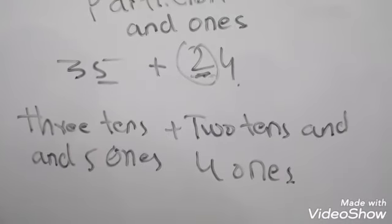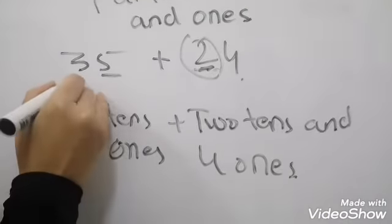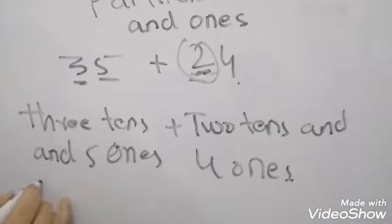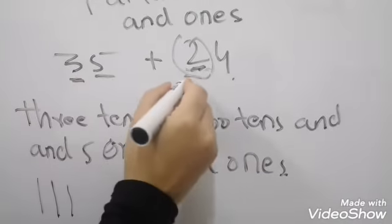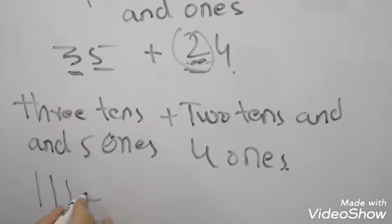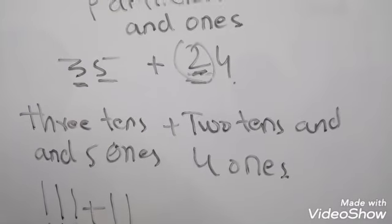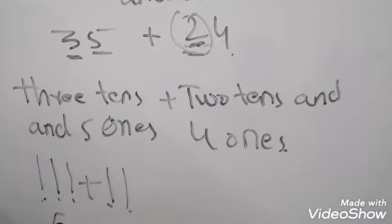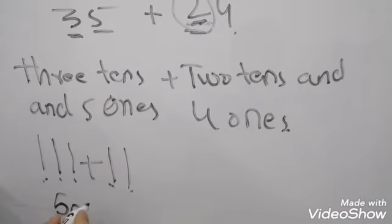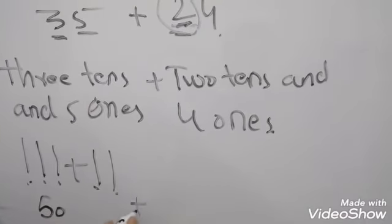Add the tens. Add the tens first. We have to add tens. 1, 2, 3. 3 tens plus 2 tens. 1, 2, 3, 4, 5. 10, 20, 30, 40, 50. 50 plus 9.